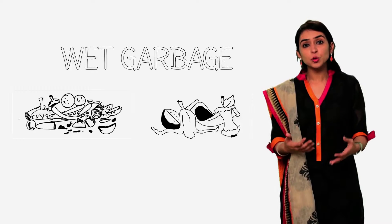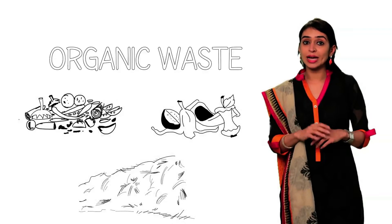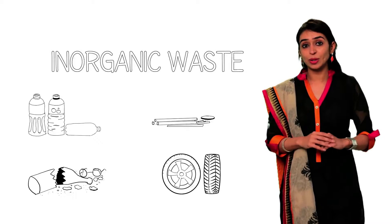Garbage collected has two portions. Wet garbage such as vegetable waste, fruit waste, horticulture waste, etc., also known as organic waste. And dry garbage such as plastics, metals, glasses, rubber, also known as inorganic waste.